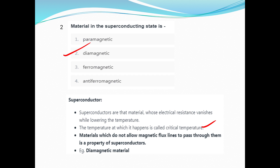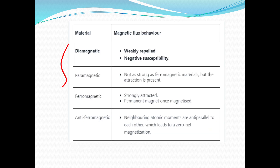For example, diamagnetic materials in a superconducting state exhibit this property. Regarding magnetic flux behavior: diamagnetic materials are weakly repelled and have negative susceptibility. Paramagnetic materials show very strong attraction. Ferromagnetic materials are strongly attracted. Anti-ferromagnetic materials are anti-parallel.